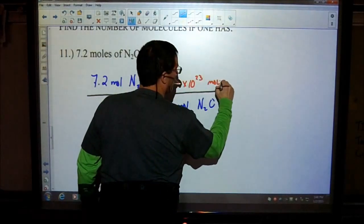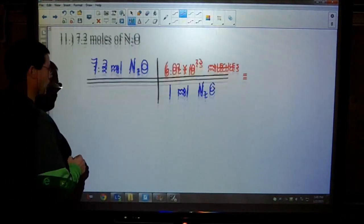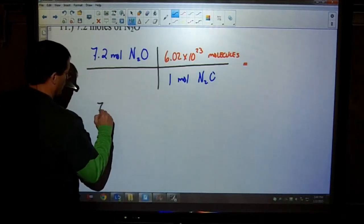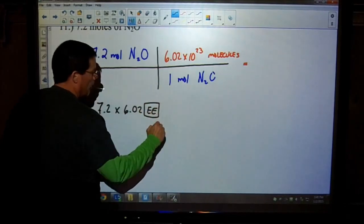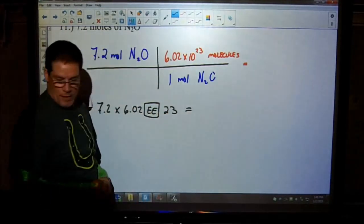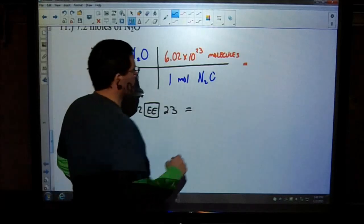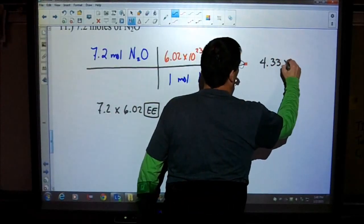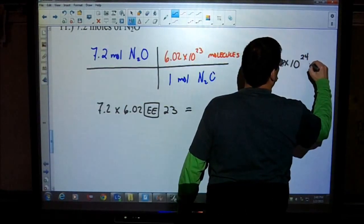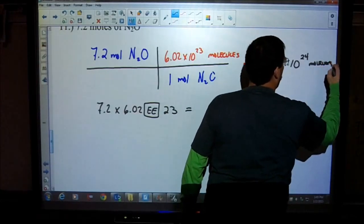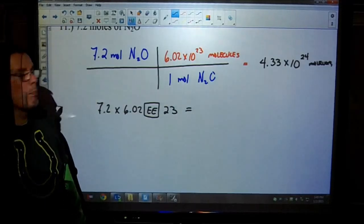We're going to go from moles to molecules. So 6.02 times 10 to 23, and that's molecules. In this case, it's 7.2. Make sure you can do this on your calculator. 7.2 times 6.02 EE. And that will give us 4.33 times 10 to the positive 24. That's a pretty nice problem.